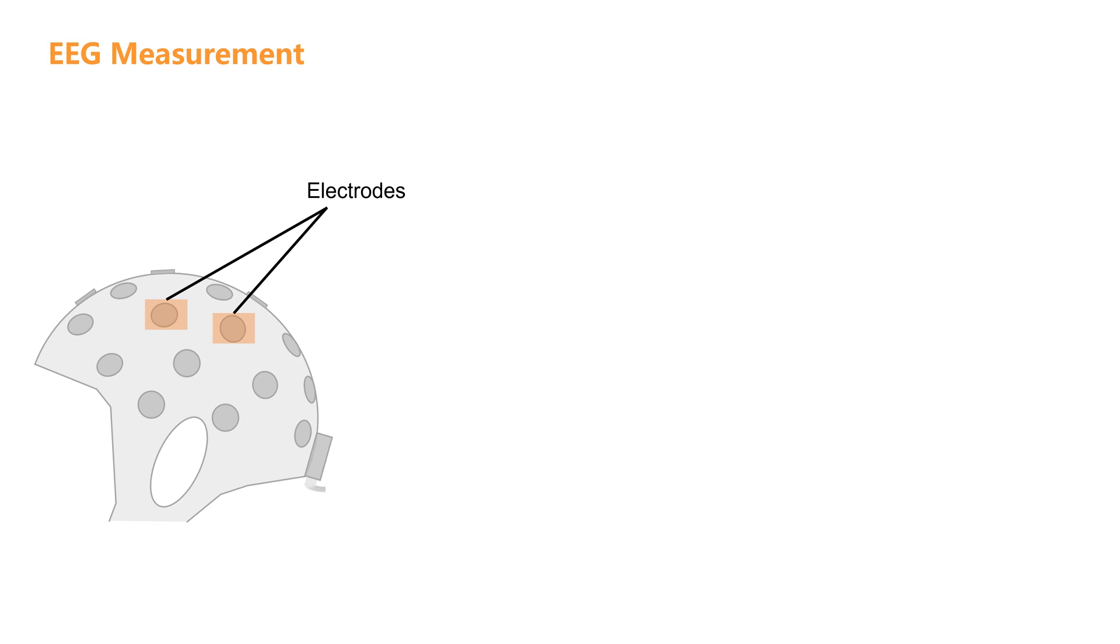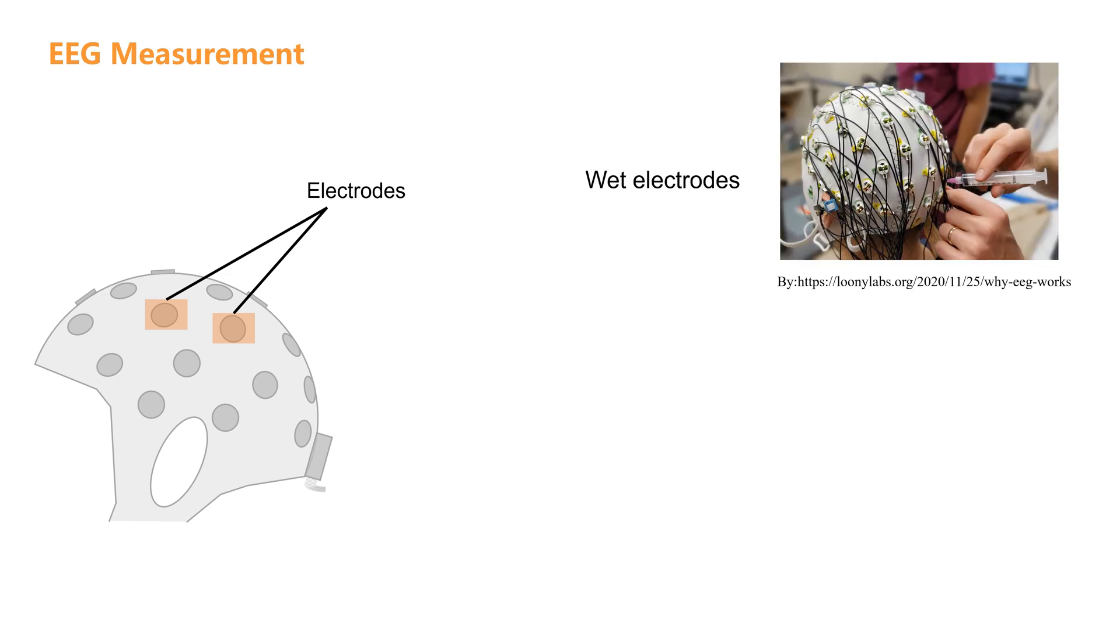Each has its own strengths and weaknesses, just like different types of cooking utensils, suitable for different purposes. First, we have wet electrodes, the classic cookware of the EEG world.